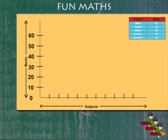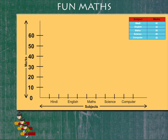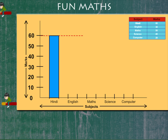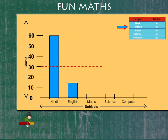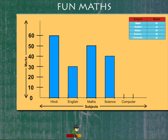So, the subjects are on the x-axis and the marks on the y-axis. Here are the bars for Hindi, English, Maths, Science, and Computer.